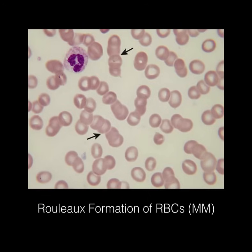Here we have a rouleau formation of red blood cells, which is classic of multiple myeloma. The red blood cells kind of form a stack — they should be more spread out, but in this case they're stacked on one another.